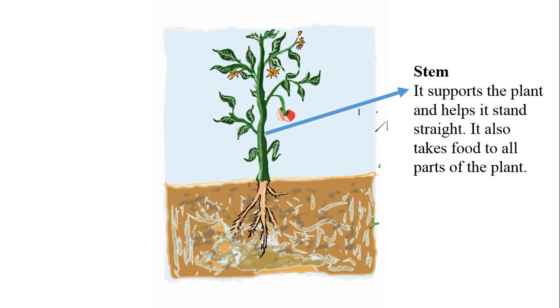Stem. The stem supports the plant and helps it stand straight. It also takes food to all parts of the plant from the root.